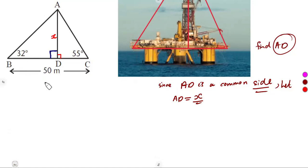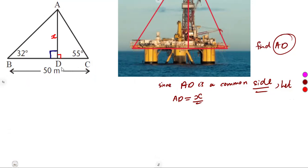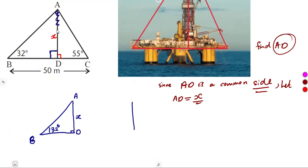We can rewrite the trigonometrical ratios in terms of x. Take note: do not be confused with the 50 meters and divide it into two — that's wrong. There is no equal distance stated. The 50 meters is from B to C. So what you can do is, with x representing AD, separate and define the other sides in terms of x. In this triangle, with the 32-degree angle, AD is x.